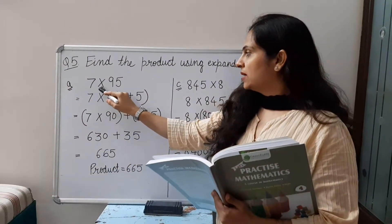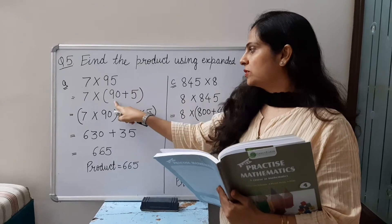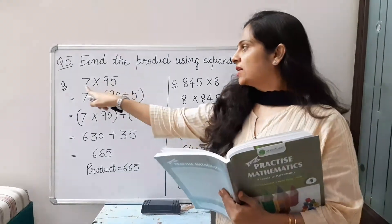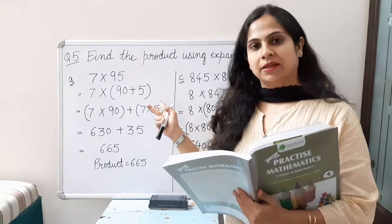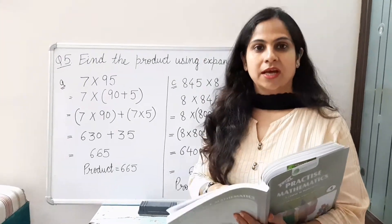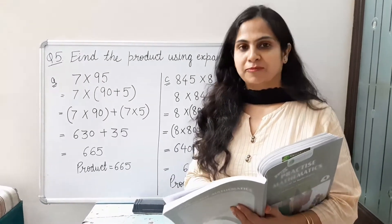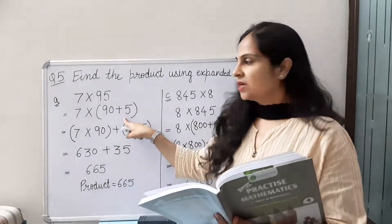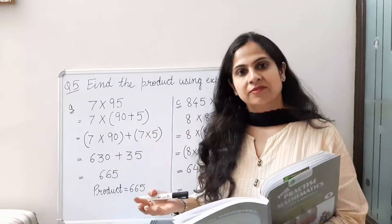Part A is 7 multiplied by 95. Here we will distribute 95 into 90 plus 5 and write it in expanded form. In our previous class, we discussed properties of multiplication. There is one property called the distributive property, which tells us how to distribute. In the same way, we will distribute 95 into 90 plus 5.